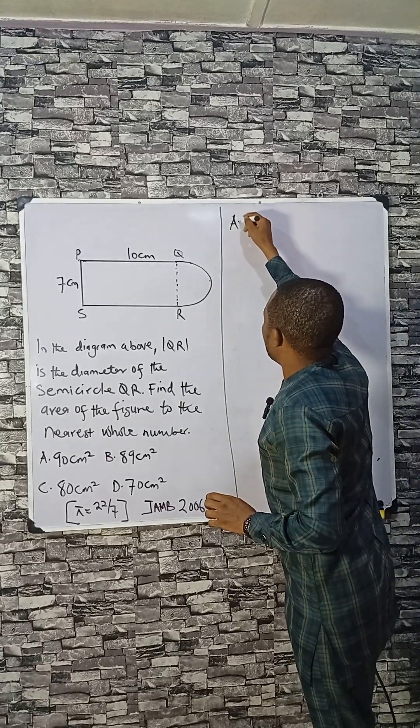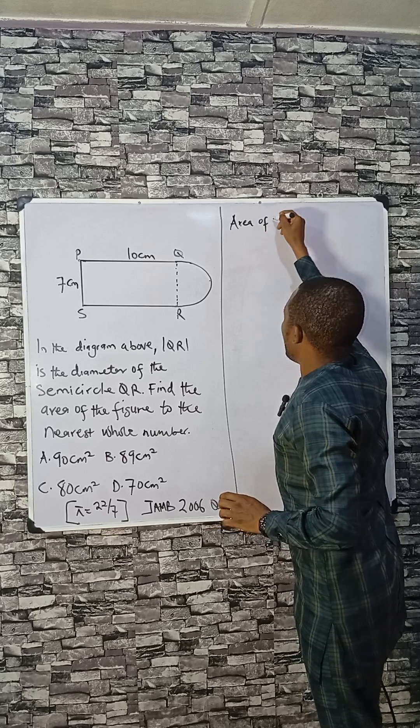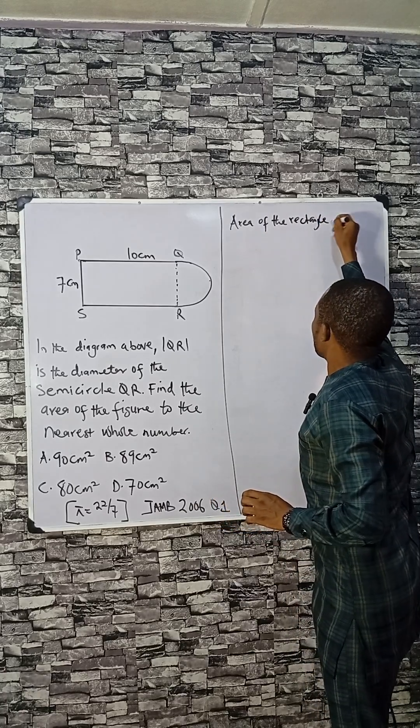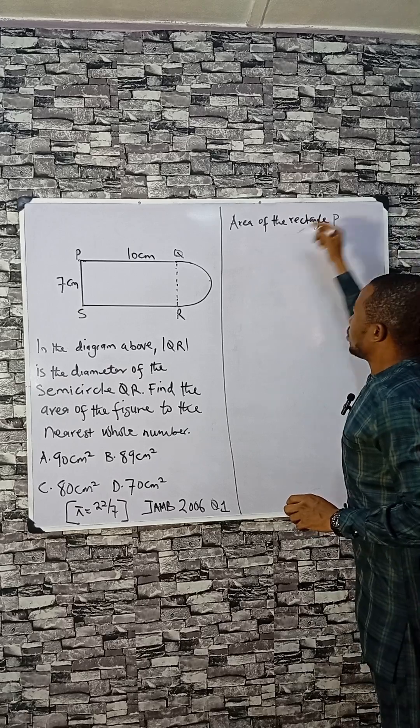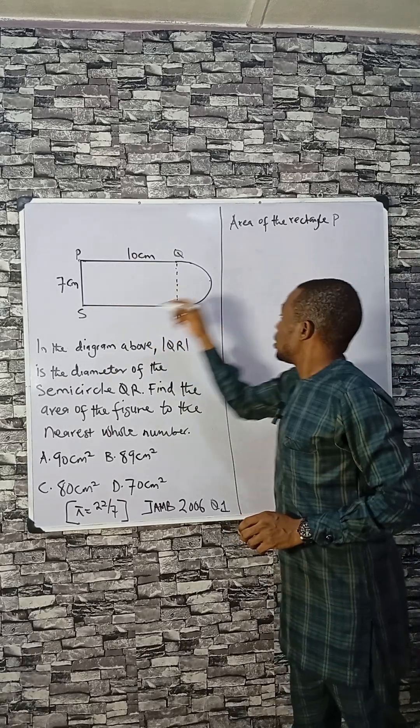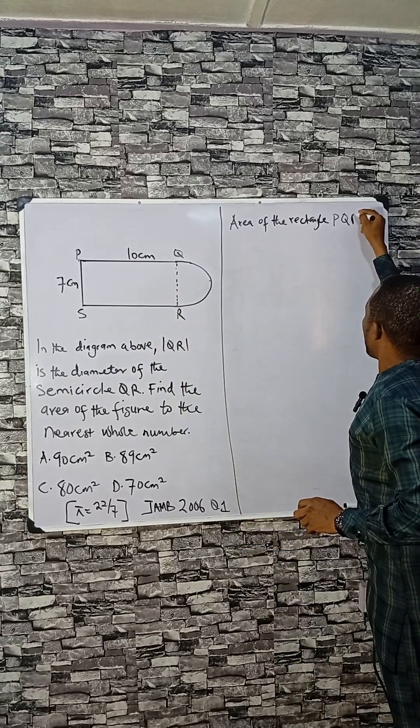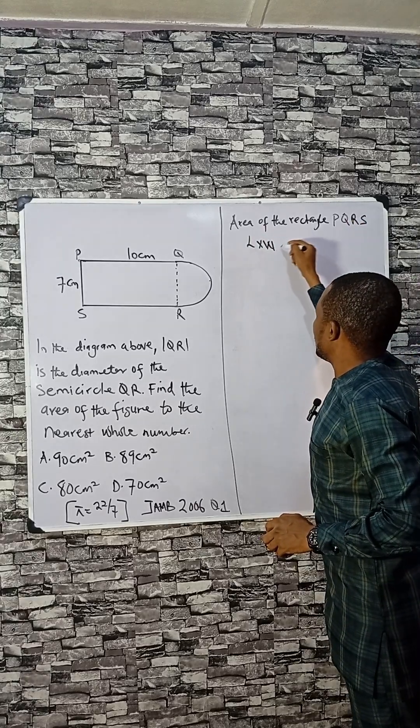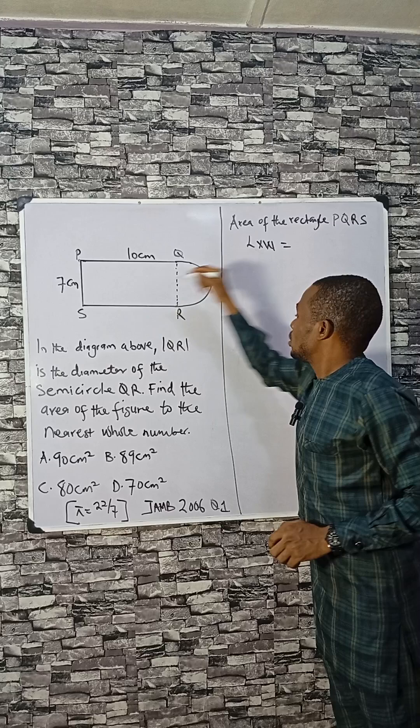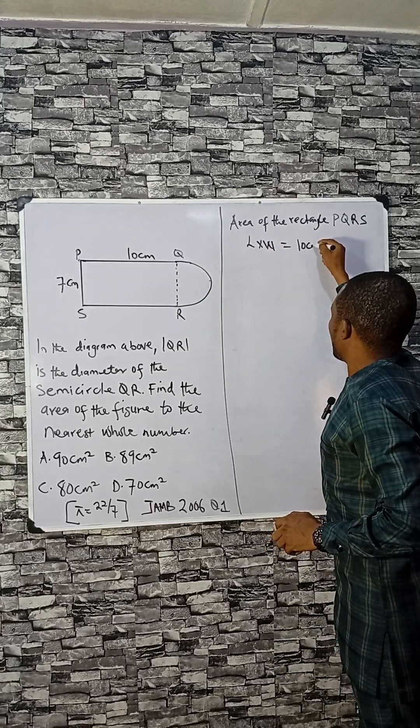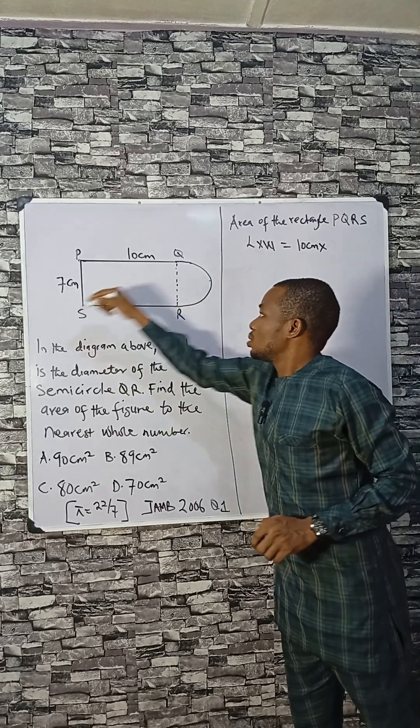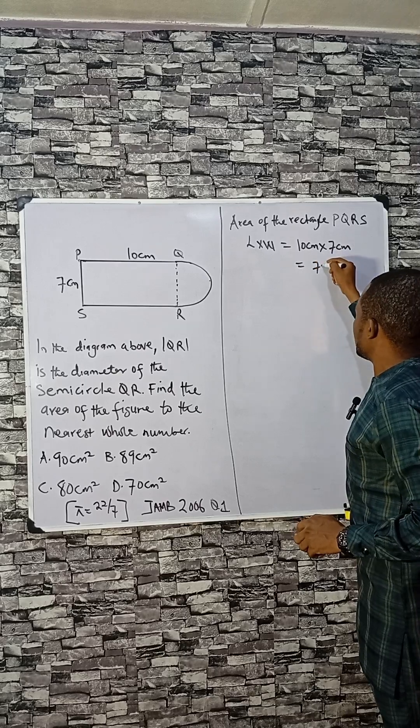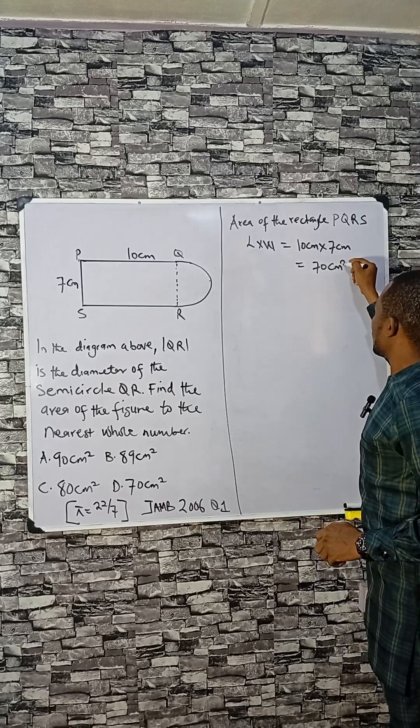The area of the rectangle PQRS is given by length times width. The length, the longest side, is 10 centimeters. The width is 7. That gives us 70 centimeters squared.